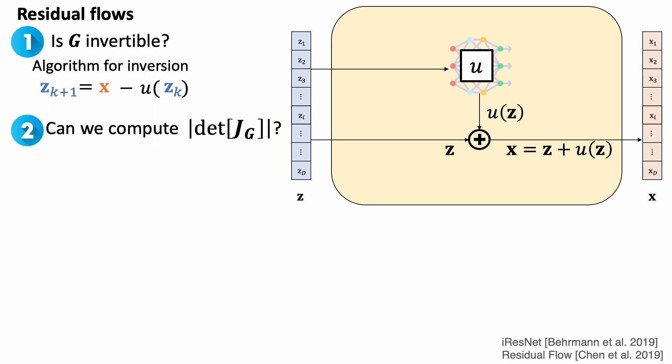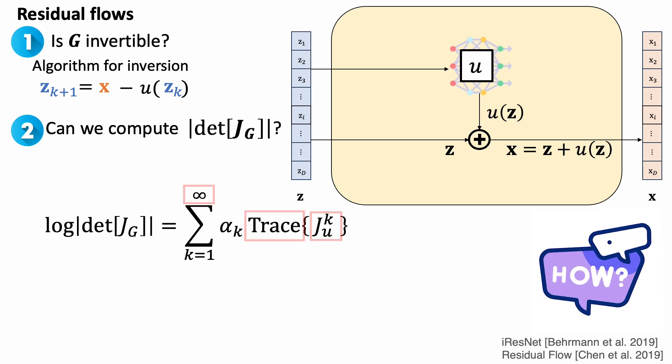How about the determinant? With some math, we can expand the determinant into a sum of infinite series of matrix traces. But this is scary. We need to compute the trace of Jacobian matrix, perform matrix multiplication after k's power, and sum up infinite terms. How is it possible?